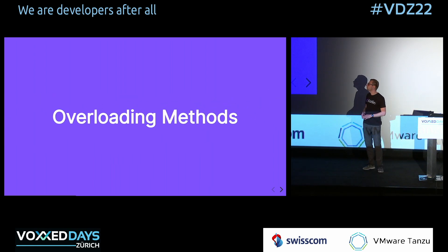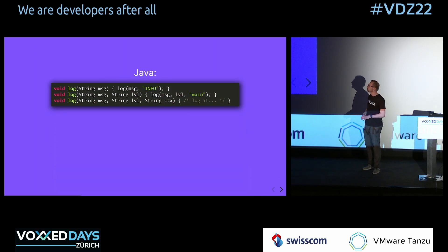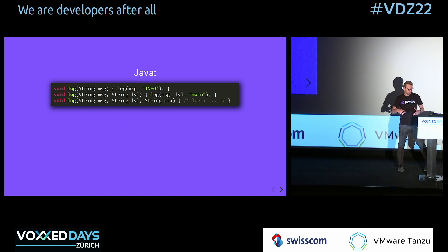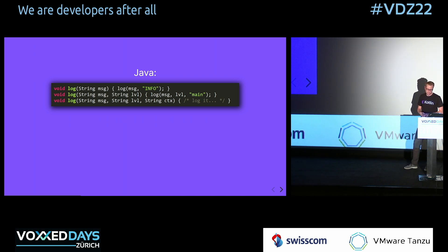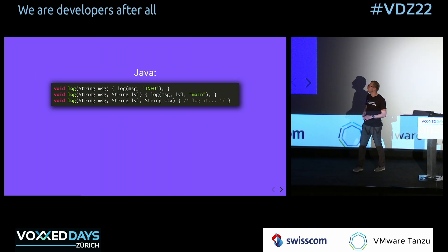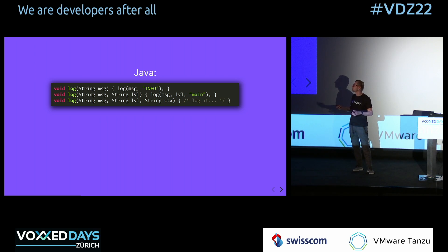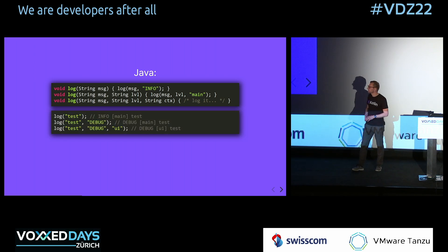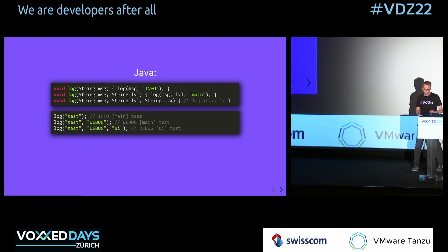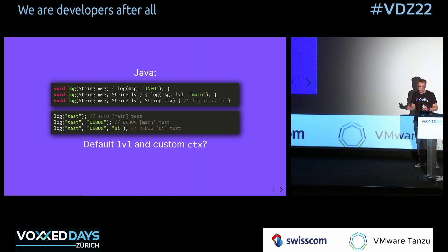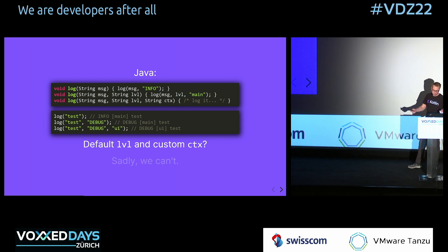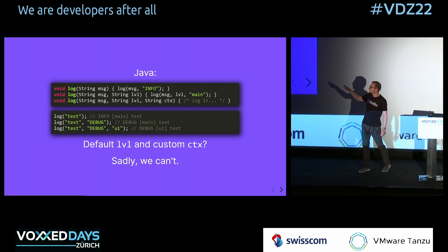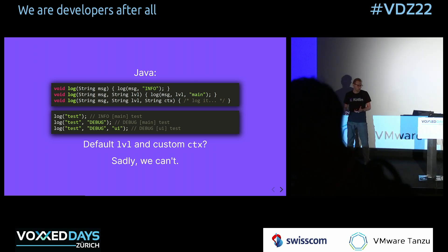Let's look at the next pattern: overloading methods. We've all learned that in school. Overloads are like calling the next function with default values for your parameters. You end up with a function with three parameters — message, level, and context, all of type String — and multiple overloads. But how do you pass a default level and a custom context? Sadly, we can't do that in Java, because if we have a function missing the level parameter, the signatures collide.